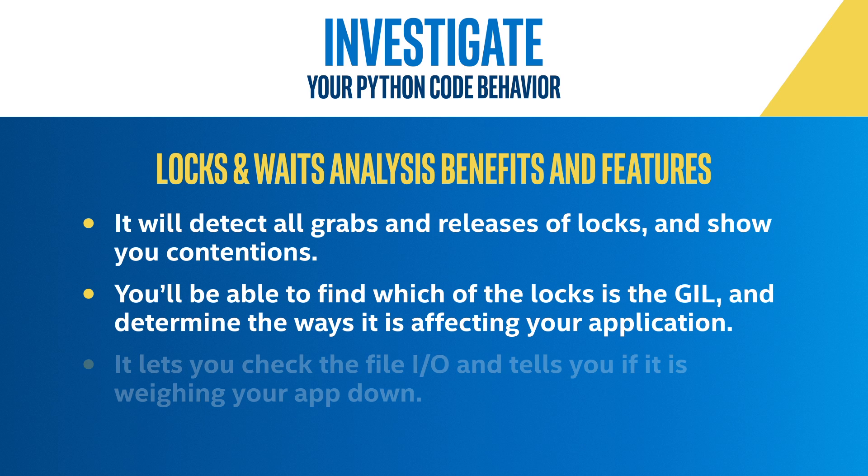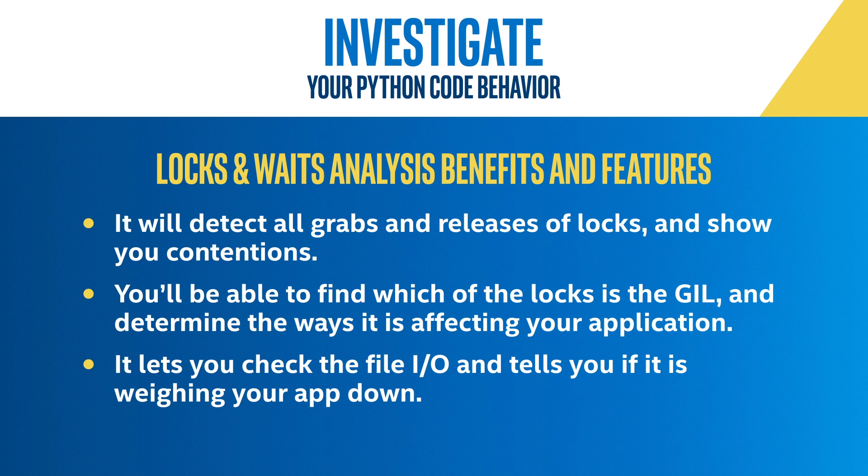And finally, the analysis lets you check the file I/O and tells you if it's weighing your app down. Profiling, combined with using a faster Python like Intel Distribution for Python, helps you get the best performance from your Python applications. You can get access to Intel vTune Amplifier and Intel Distribution for Python by following the links. Be sure to visit the Intel Developer Zone forum as well. And thanks for watching!